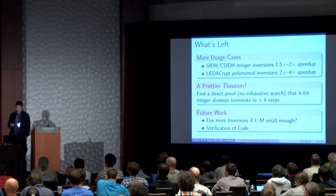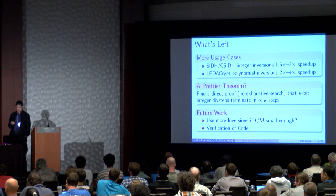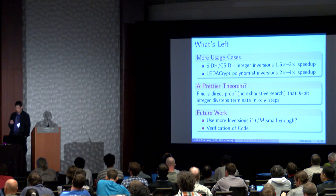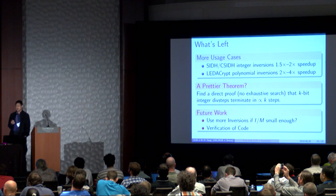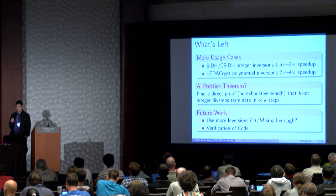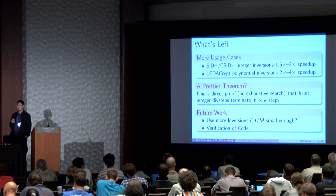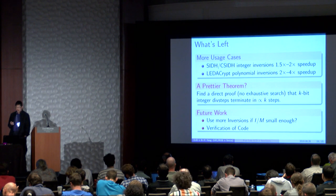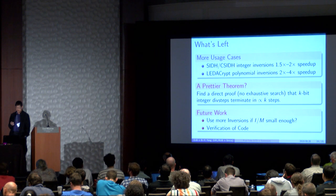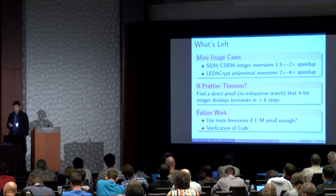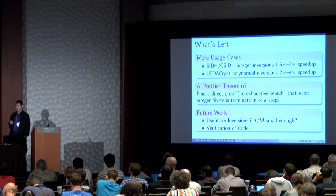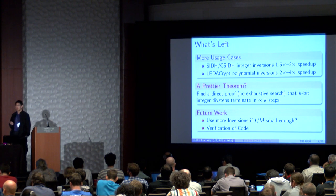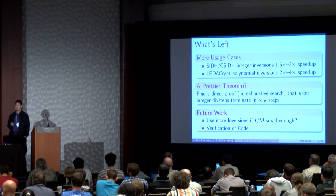And what's left, there are more usage cases. So there is C-SIDH and you can get integer inversions that's between 1.5 to 2.2 times speed up. At PQCrypt, the PQC standardization workshop, the BIKE developers said that they can get 2 times up to 4 times speed up. And our proof of the termination theorem uses exhaustive search and we can find a prettier proof. And there are future work and we can verify our complex code and sometimes we can use more inversions if the ratio of I over M is small enough. I think that's it and I take any questions.